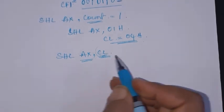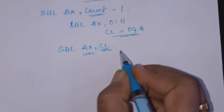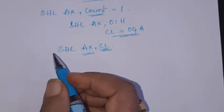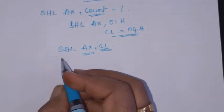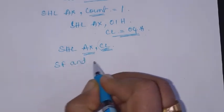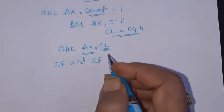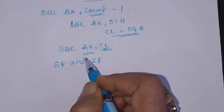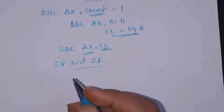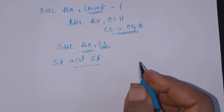So the instruction becomes SHL AX, CL. The contents of the AX register will be shifted towards left by however many bits are specified in CL — 2 shifts if CL is 2, or 4 bits shifted if CL is 4. The carry flag will get the most significant bit, and the sign flag and zero flag will be affected. All other flags are undefined.